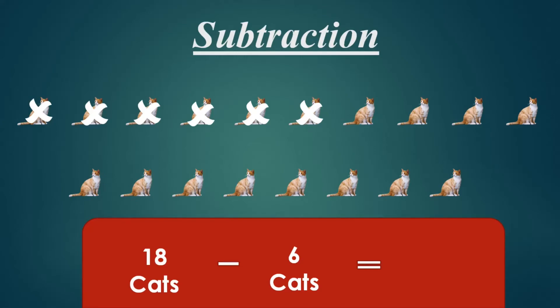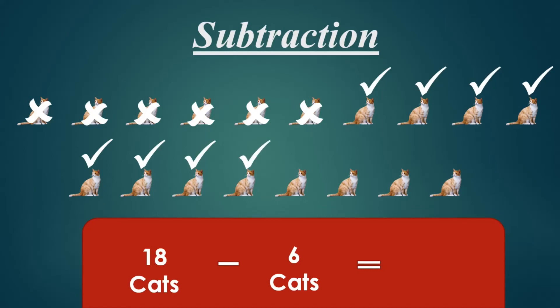Let's count how many cats are left. Count with me. Here we go: 1, 2, 3, 4, 5, 6, 7, 8, 9, 10, 11, 12. 12 cats. So 18 cats minus 6 cats is 12 cats.